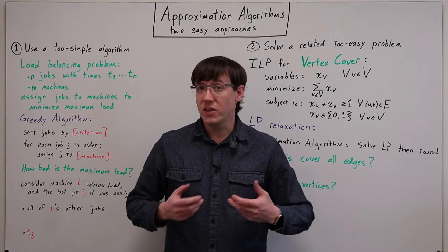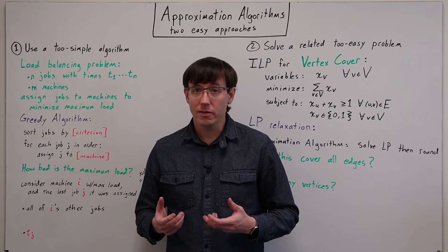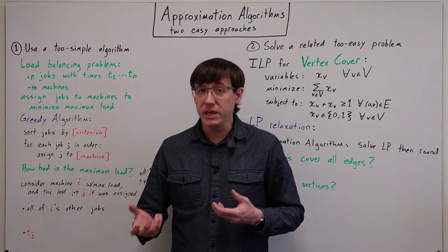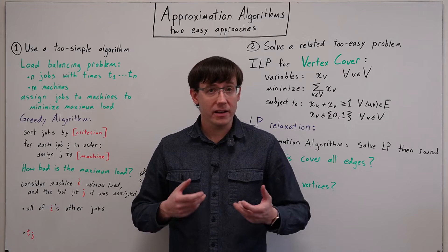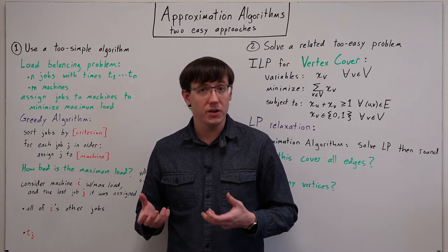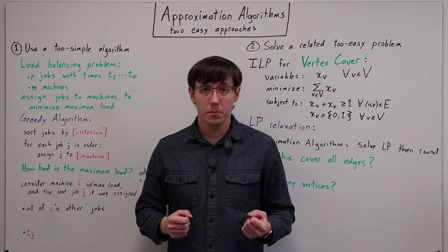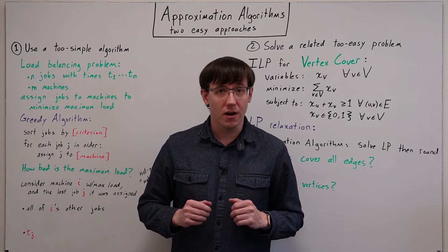When we determine that a problem is NP-complete, we know that unless P equals NP, we can't expect to find a polynomial time algorithm. But that doesn't mean all hope is lost.